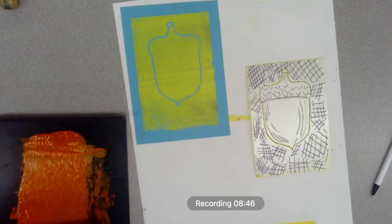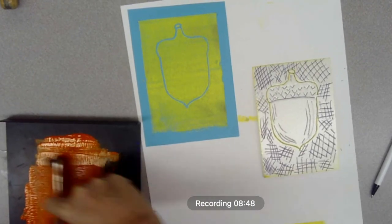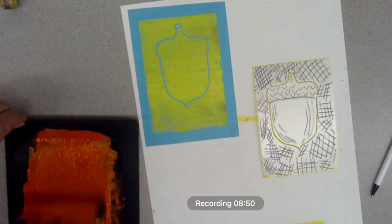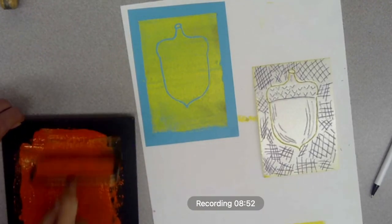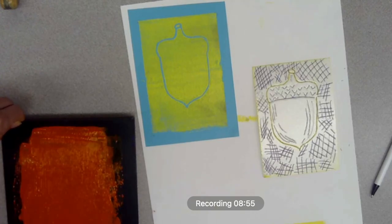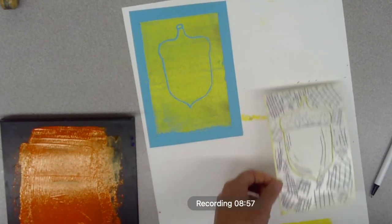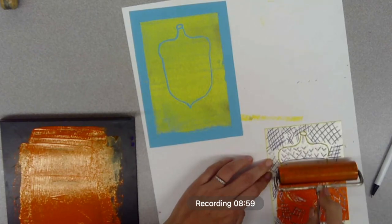I'm using orange for my next color and I'm going to do the same process I did before. Roll it until it sounds like bacon and then roll it all over your styrofoam. Now it's going to look a little different because I have more designs.